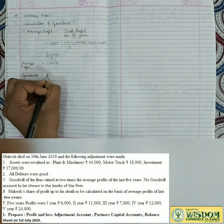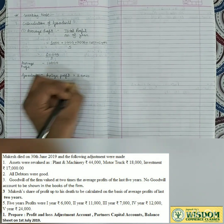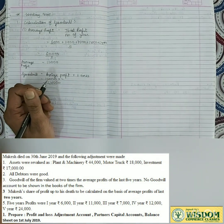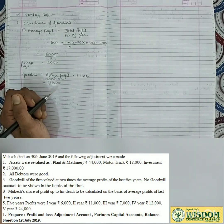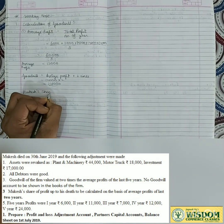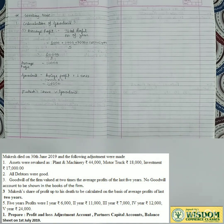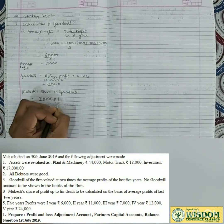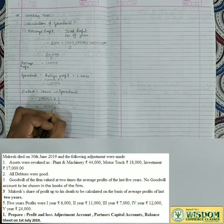Now, Mukesh died, so we find Mukesh's share in goodwill. Profit sharing ratio is 3:2:1, so Mukesh's share is 1/6. Mukesh's share in goodwill = 24,000 × 1/6 = 24,000 ÷ 6 = 4,000 rupees. This is the final goodwill amount for Mukesh: 4,000 rupees.